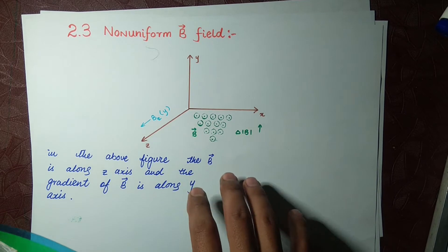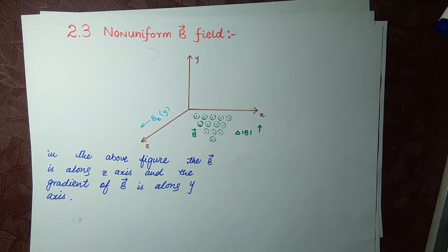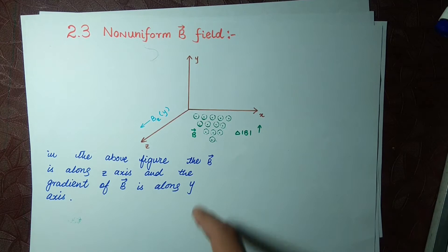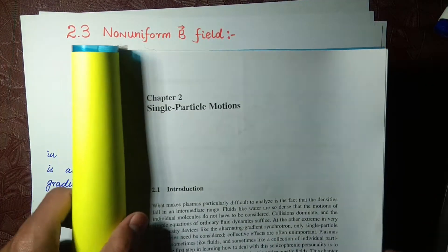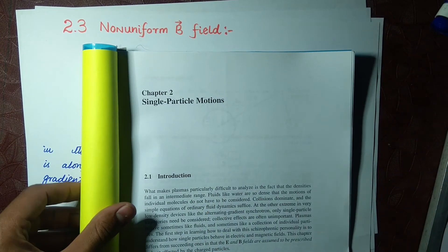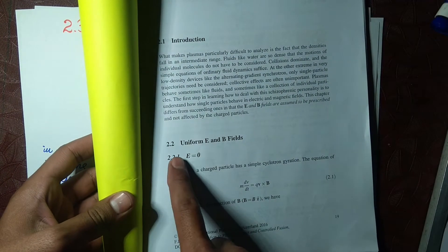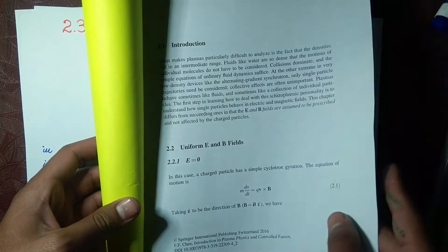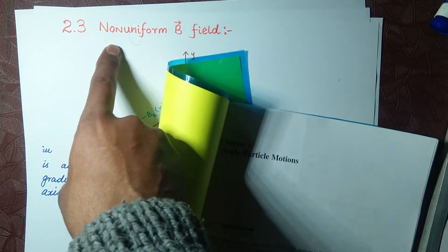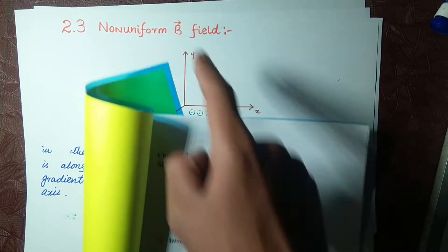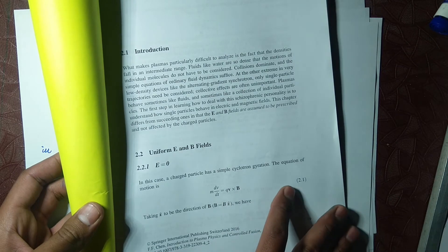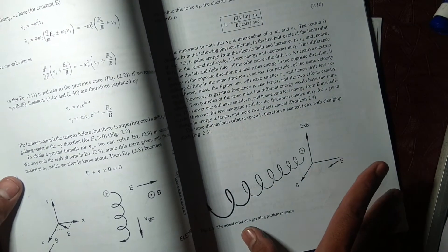Welcome back to Learn Daily Physics. Today we are going to start topic 2.3 of F10 non-uniform magnetic field. We have started chapter 2 on single particle motion and discussed section 2.2 on uniform electric and magnetic fields. Now we are going to start section 2.3 on non-uniform magnetic field.